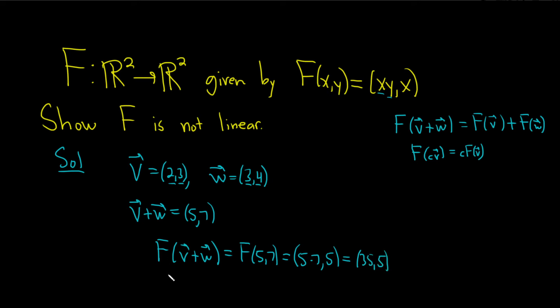So now let's look at F of v and F of w. F of v, that'll be F of 2, 3. So that would be 2 times 3 and then 2. It's x times y and x. So that'll be 6, 2.